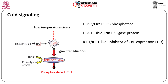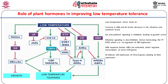A cyclic nucleotide-gated calcium channel (CNGC) has been identified as a low temperature activated calcium channel. It has been shown that this increase in calcium concentration is required for full expression of at least some cold regulated genes and for plant cold temperature tolerance. Besides calcium, inositol polyphosphate (IP3) is also known to play an important role in signaling for cold stress. Low temperature stress leads to increases in ABA and JA levels, and decreases in GA, ethylene, and cytokinin levels.